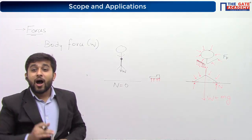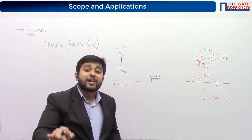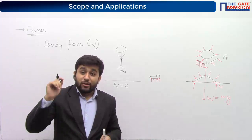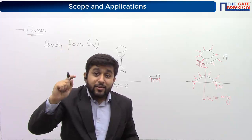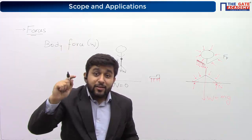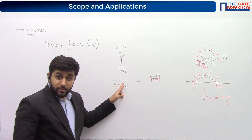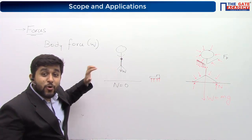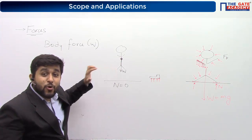Normal reaction and weight are not always equal. If you are in a lift accelerating upwards, normal reaction is greater than weight; if decelerating, normal reaction is less than weight. Normal reaction is applied by the ground on the surface of the body because of direct contact. The forces applied by surrounding medium on the surface of the body by direct contact are called surface forces.